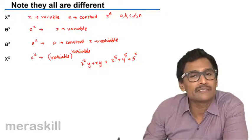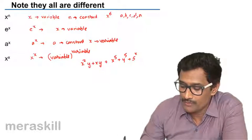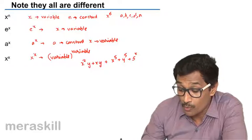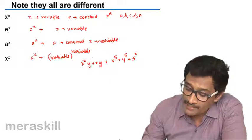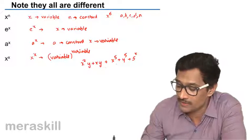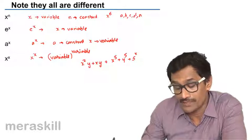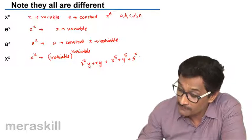So here you have two variables. Here you have two variables. y is also raised. So y's derivative has to be found in a different way. x's derivative has to be found in a different way. This one is in a different way. This one is in a different way. This one is in a different way.